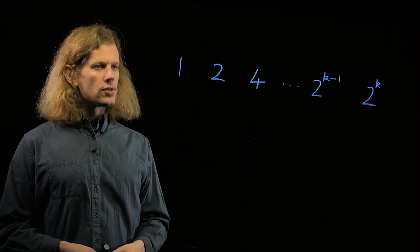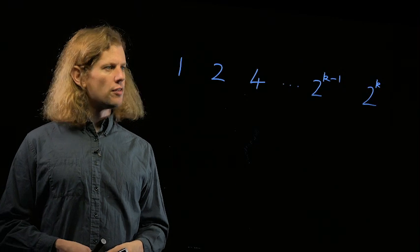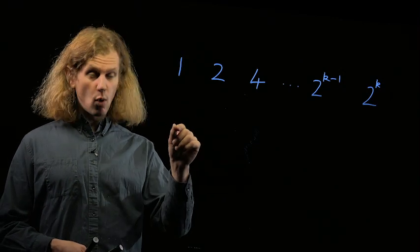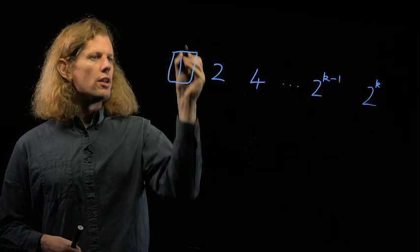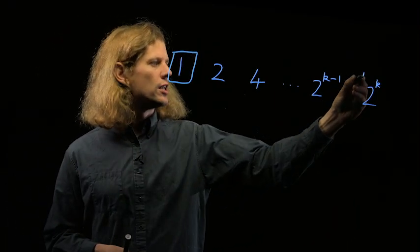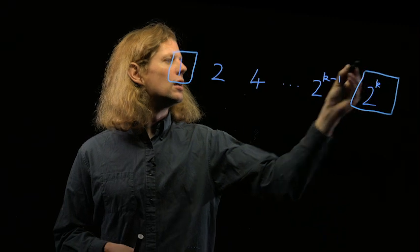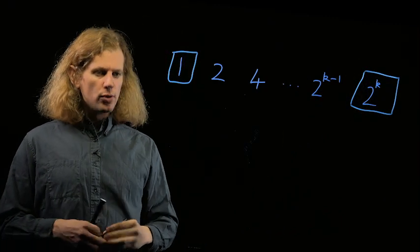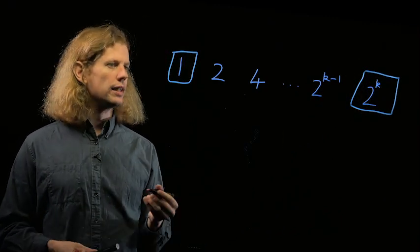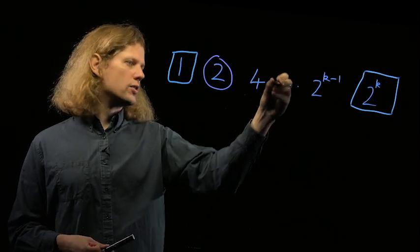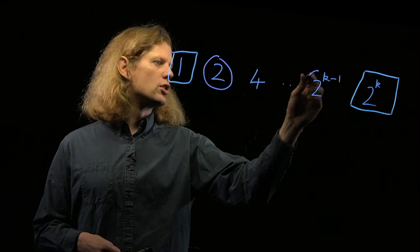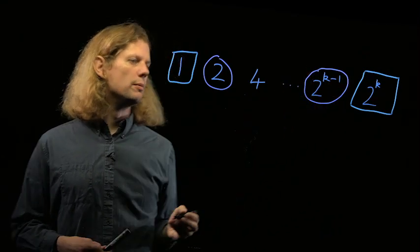Now, what we're asked to count is the number of lists of factors where every term divides the one after it. So the rules say I've got to start with 1, and the rules say I've got to finish with 2 to the k itself, but I can choose or not choose to have any of the terms in between.